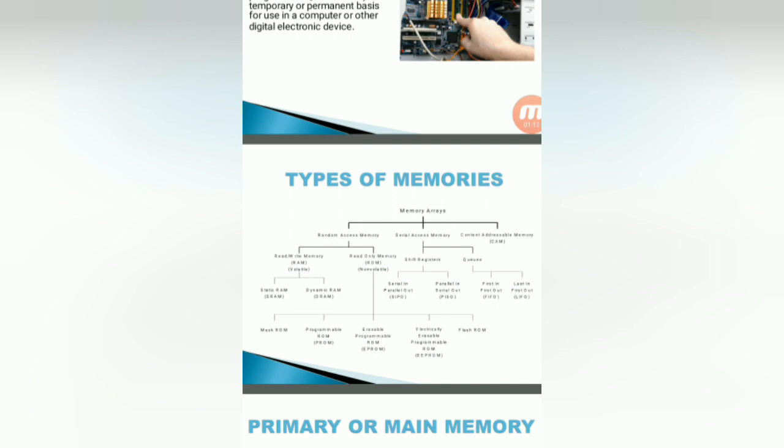Programmable means you can change the data in ROM based on either electrical signals or based on ultraviolet rays. So like that we can divide the different types. Among these, flash ROM is used for general applications. It is a fast memory.